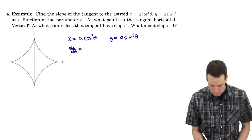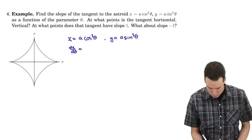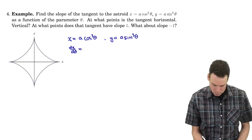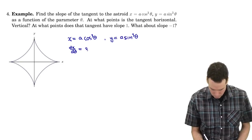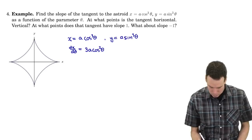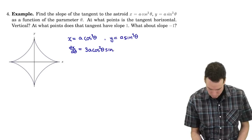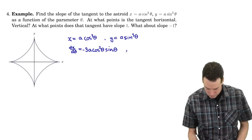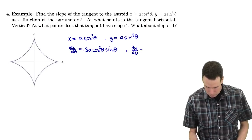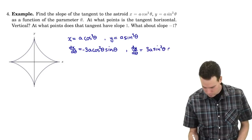So dx/dθ is going to be a chain rule — it's a composition of cosine with a cube. Since a is just a constant, this is going to be 3a cos squared theta times the derivative of the inside function cosine, so that's negative sine theta. dy/dθ is 3a sin squared theta times the derivative of sine, which is cos theta.